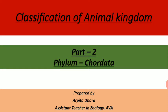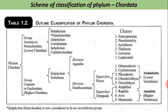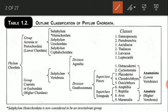Let's start our discussion with the scheme of classification of phylum Chordata. Phylum Chordata is divided into two groups: Protochordata and Euchordata. Protochordata is also known as Acrania, as they have no cranium or brain box, and Euchordata is known as Craniata. Protochordata is divided into subphylum Urochordata and Cephalochordata.